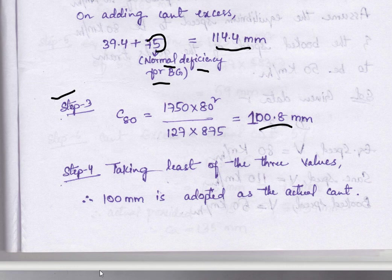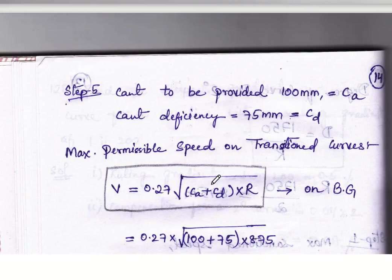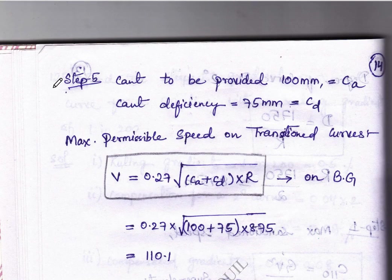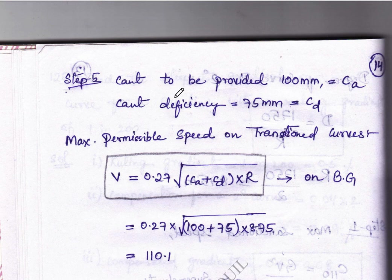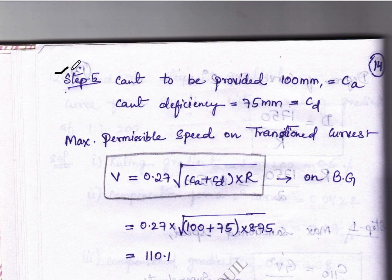The least value will be our superelevation. Next, step 5: Cant to be provided which is actual cant is 100 mm and cant deficiency is 75 mm which is denoted by Cd.